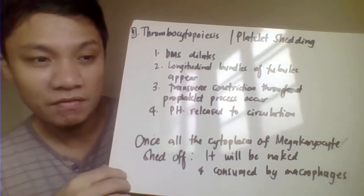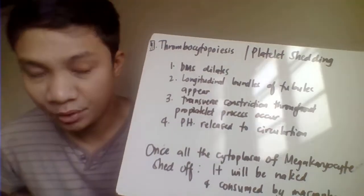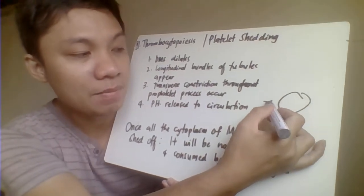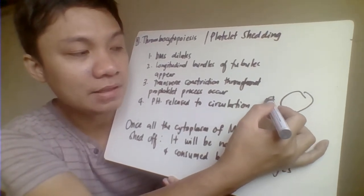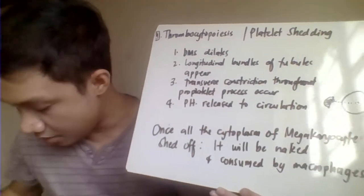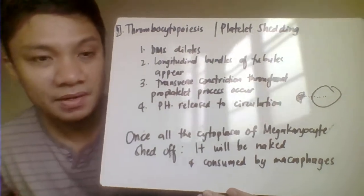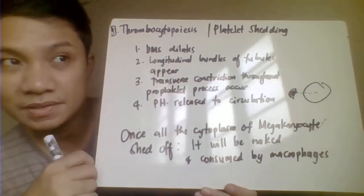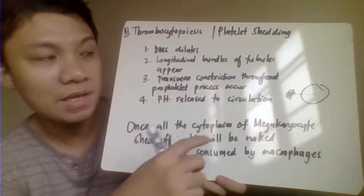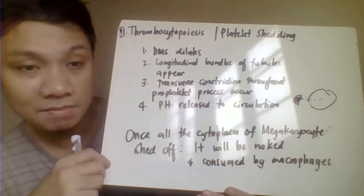That would eventually be produced as a form of your string — the pro-platelet process, or beads. So when your megakaryocyte divides, it becomes individual platelets, forming what are called pro-platelet processes, described as beads of string, which eventually get released into your peripheral circulation and become individual platelets.